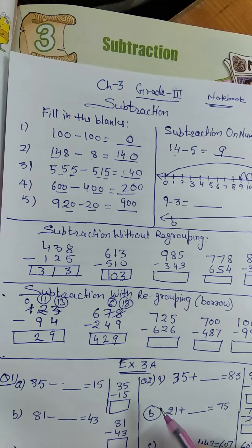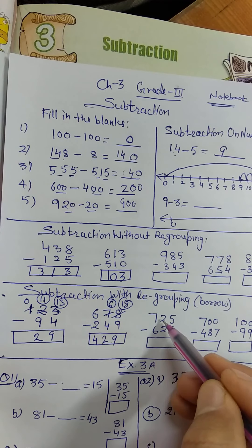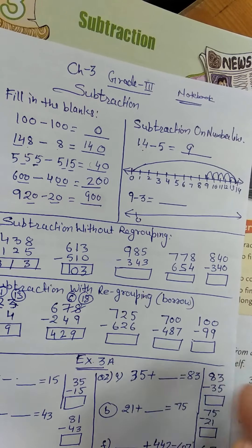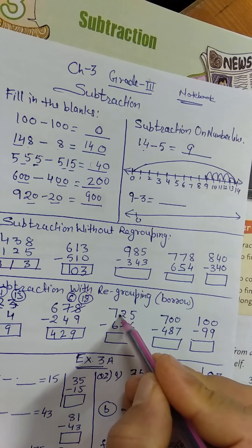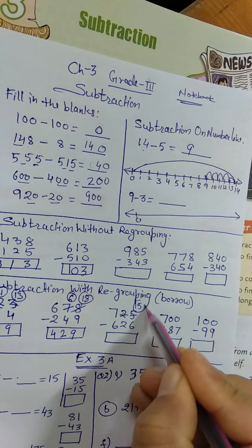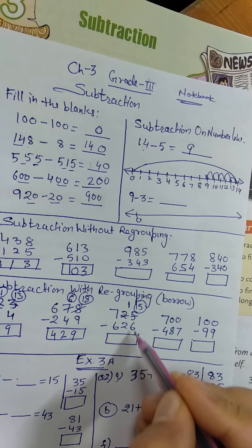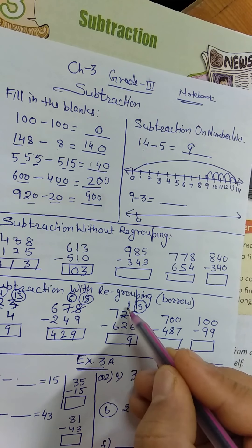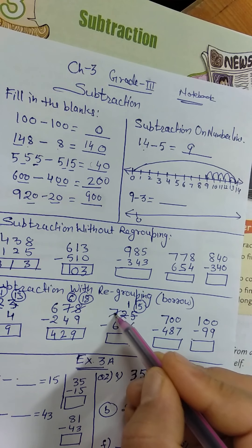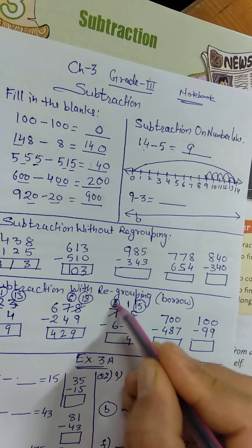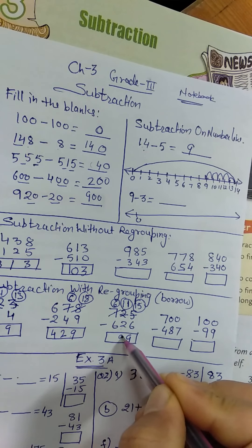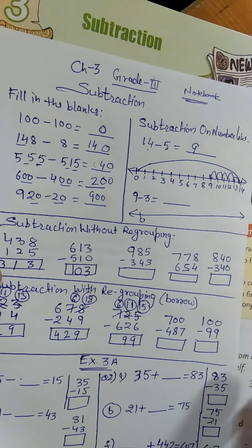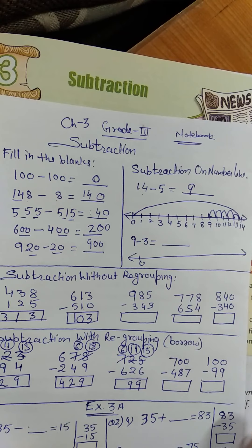For 725 minus 626: you also take borrow two times. First borrow: it becomes 15 and this becomes 1. 15 minus 6 is 9. But 1 minus 2, you can't do — 2 is more than 1. So take a second borrow from 7: 7 becomes 6 and here it becomes 11. 11 minus 2 is 9; 6 minus 6 is 0, no need to write. The remaining parts you can do yourself.